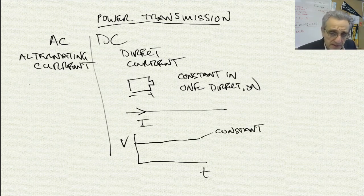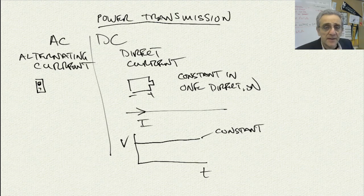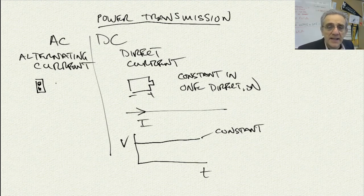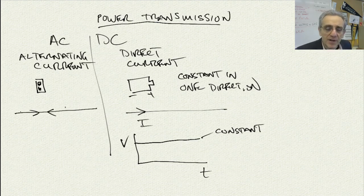On the other hand, with alternating current, this is the current that comes out of our wall sockets. This is what is used for distributing power, and we'll actually take a look at why that is. It's varying, it changes directions. So in terms of a wire, it's not in one direction but it's in both directions. It keeps changing directions.